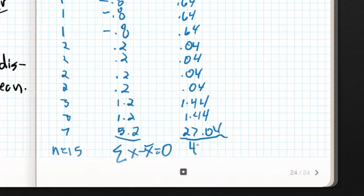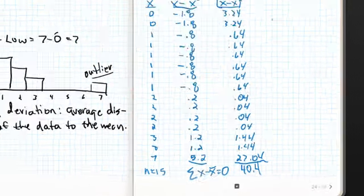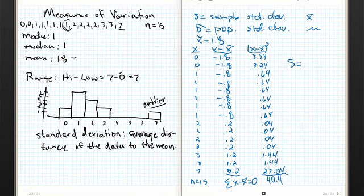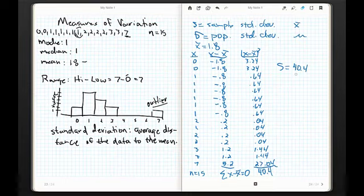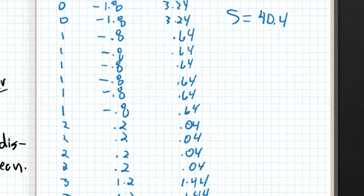Now, your Spidey sense may be tingling — and you're right. Remember, the units on this data were number of kids. The differences are also in number of kids, but as soon as we square this we've lost the units. We end up with kids squared. We need to add all of this up first — the sum of the squares of the distances is 40.4.